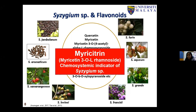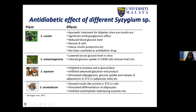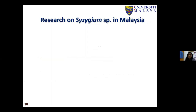Different plants under this genus have been assessed for antidiabetic properties and many have shown very good anti-diabetic effects. For example, Syzygium cumini, the famous black plum, has been used as ayurvedic treatment for diabetes since the pre-insulin era and has been marketed as an anti-diabetic drug due to its significant anti-diabetic property. In Malaysia, two plants have been investigated: Syzygium aqueum, the water apple, and Syzygium polyanthum, the Indian or Indonesian bay leaf, where leaf extracts have shown significant anti-hypoglycemic property.